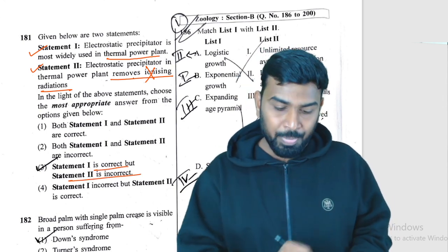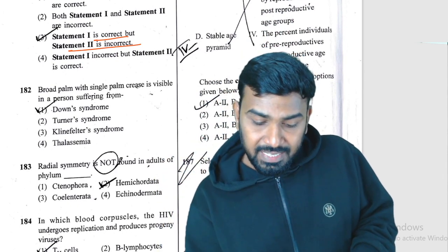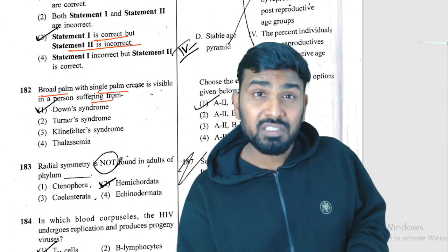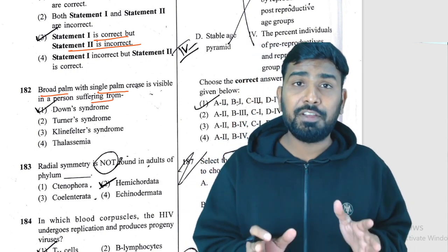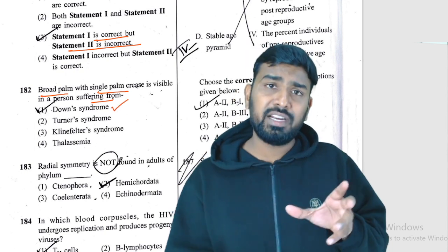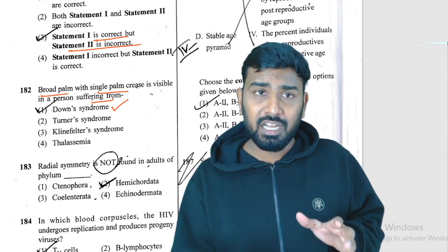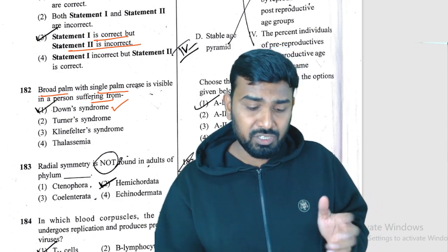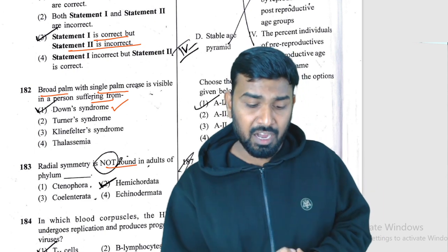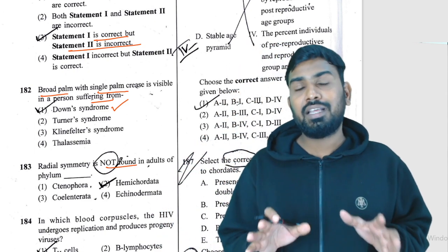Question 182: single palmar crease and broad palm are features of Down syndrome. This is directly from the NCERT figure and its listed symptoms. Q182 is Down syndrome.